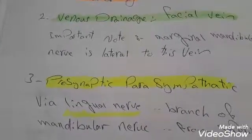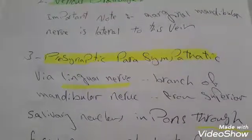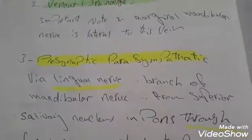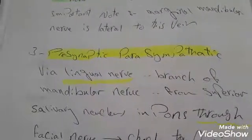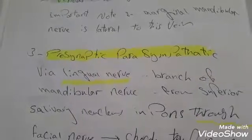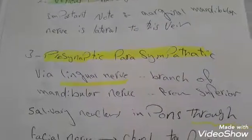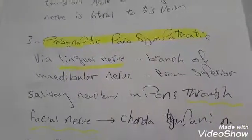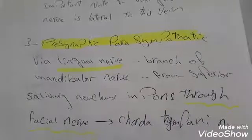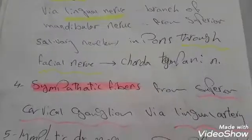The presynaptic parasympathetic nerve supply is through the lingual nerve, which is a branch of the mandibular nerve. It comes from the superior salivary nucleus in the pons — and a correction from the first video on the parotid gland: it is the salivary nucleus, not salivary ganglion. It travels through the facial nerve and then through the chorda tympani nerve. The sympathetic fibers come from the superior cervical ganglion via the lingual artery.